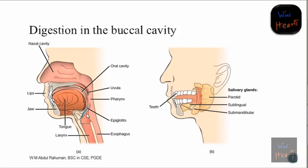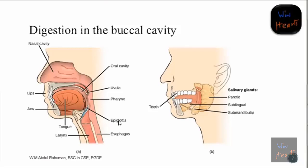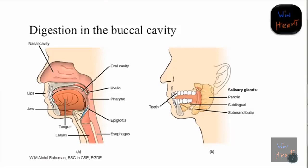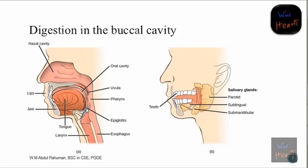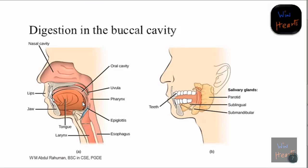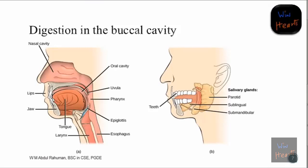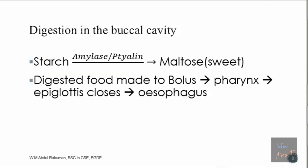When the food comes to the pharynx, there is something known as the epiglottis. It is a movable structure. What happens is it will move to block food from entering the larynx. The larynx has to do with the respiratory system, which we will study in our next lesson. If food goes into the larynx it would be a problem, so the epiglottis ensures food goes to the esophagus.